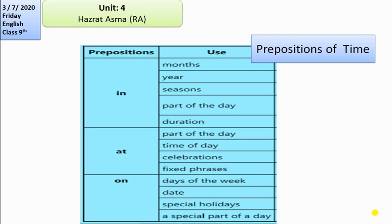Next, we have the preposition 'on.' We use 'on' to talk about days of the week — for example, 'on Sunday,' 'on Friday.' We use 'on' for dates — for example, 'on the 20th of August.' We also use 'on' for special holidays — for example, 'on Iqbal Day' or 'on my birthday.' That's it for now, thank you.